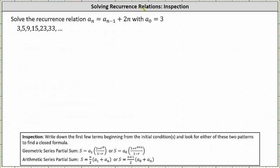In this example we will solve the recurrence relation using the method of inspection. We're asked to solve the recurrence relation a sub n equals a sub n minus one plus 2n with a sub zero equal to 3.